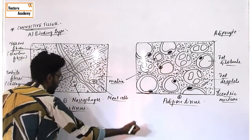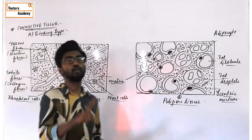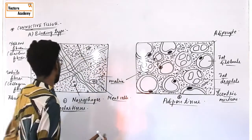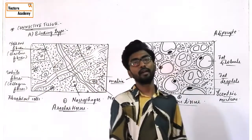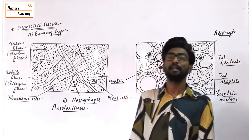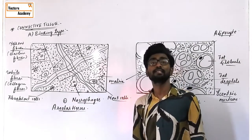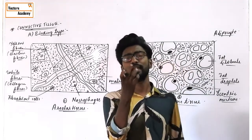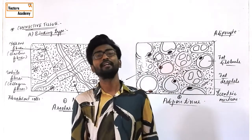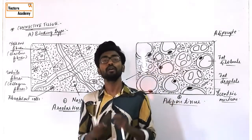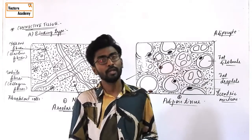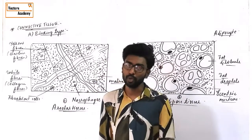The first one is areolar connective tissue. We are going to study three major points: location, structure, and function. The word 'areola' means air cavities, so it is believed that this tissue contains air cavities or air pockets — that is why it is called areolar connective tissue. This is the most widely distributed type of connective tissue in the human body, and it is also called true connective tissue.